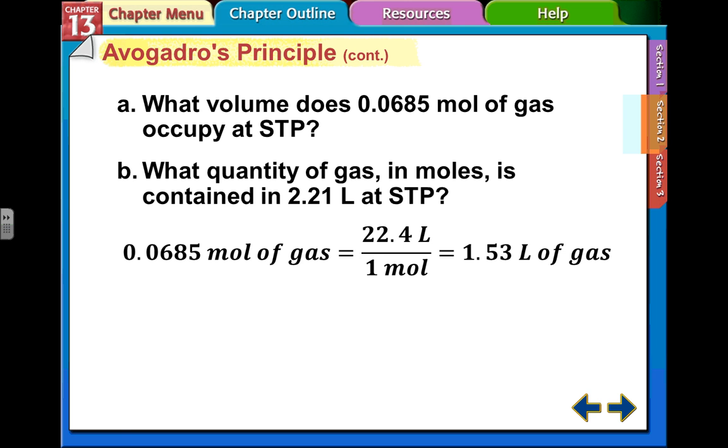The first one here. We have moles, so we're going to multiply. Our conversion factor is going to be 22.4 divided by one mole. So we multiply this number here, the 0.0685 times 22.4, and we get one and a half liters of the gas.